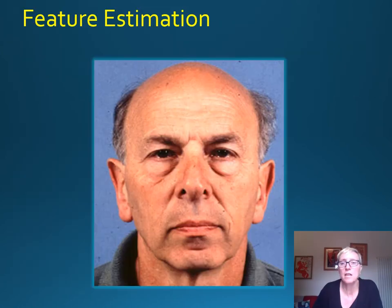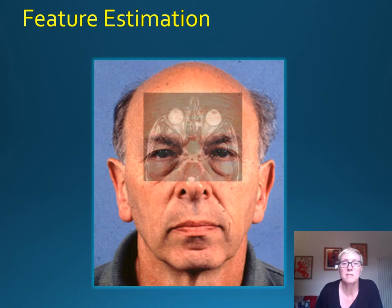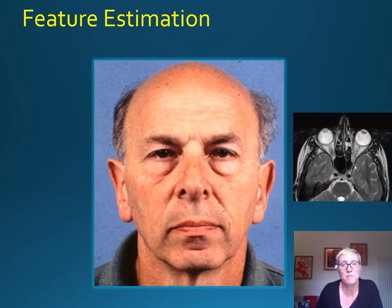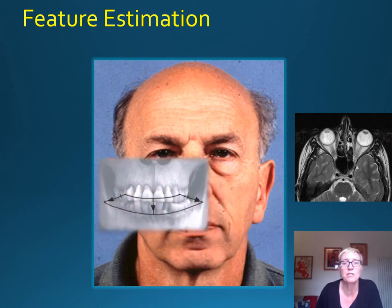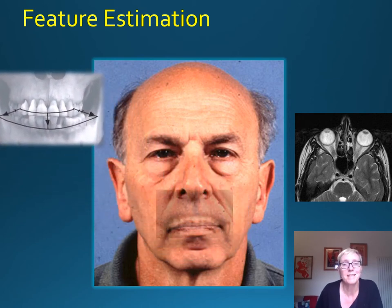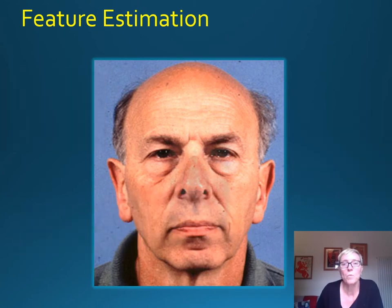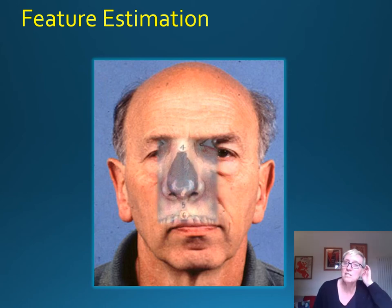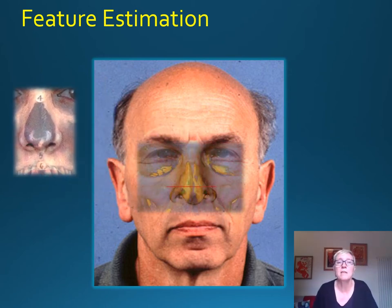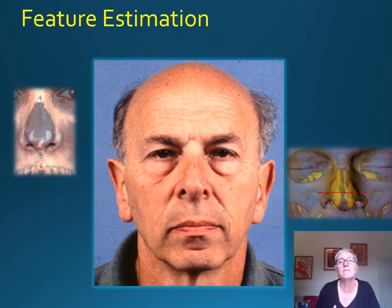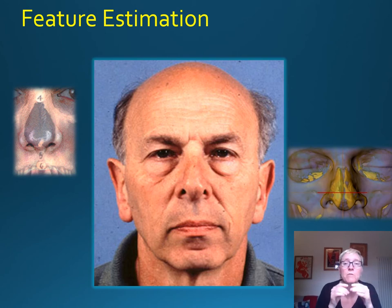The anatomical standards we use help us to predict facial features by assessment of skeletal structure. We look at the orbits to tell us about the position of the eyeball, the shape of the eyelids, and the position of the outer and inner corners of the eye. We look at the teeth to tell us about the width of the mouth, the thickness of the lips, and how the lips meet. We look at the nasal aperture for the overall shape of the nose, and the nasal spine at the base of the nasal aperture in relation to the tilt of the columella — the base of the nose — to tell us about the overall pattern of nasal shape.